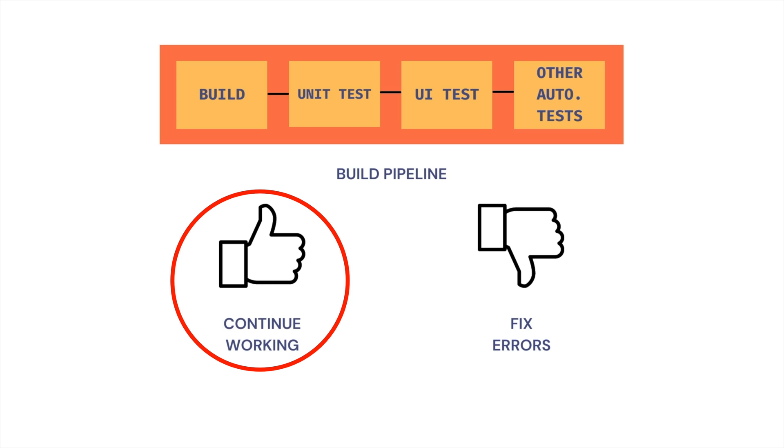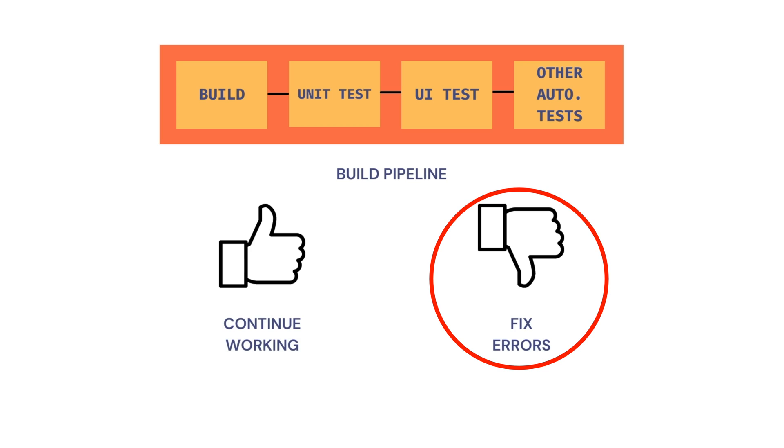The developer who checked in the code, and everyone else, is notified about the success or failure of the build. If the build was successful, the developer could continue working on the next piece of code. But if the build was not successful, the developer needs to fix the build errors before starting to work on something else.